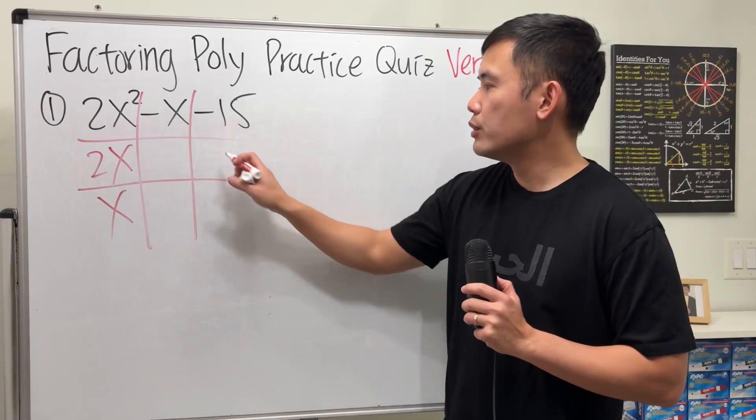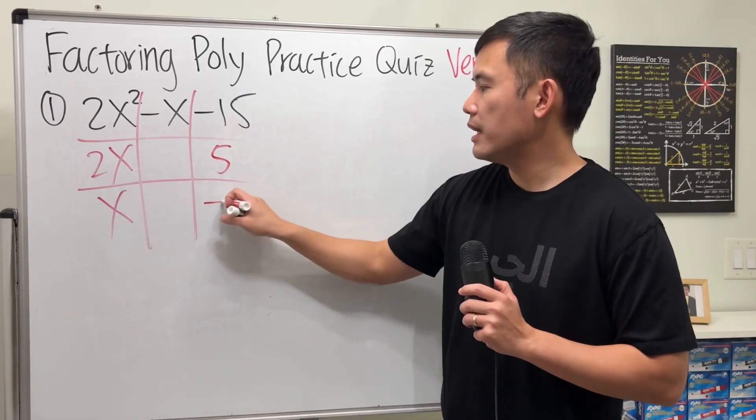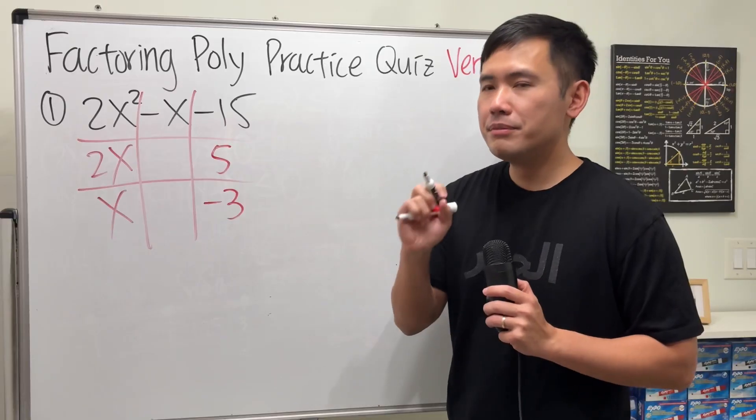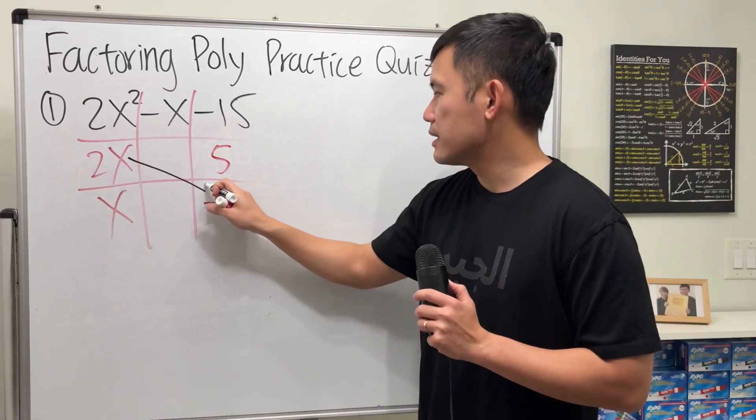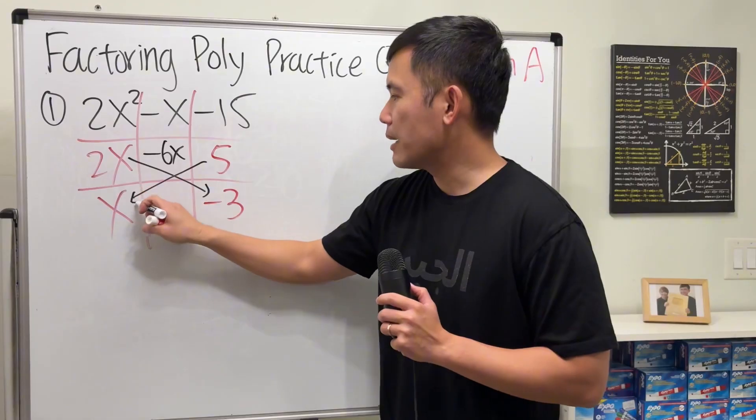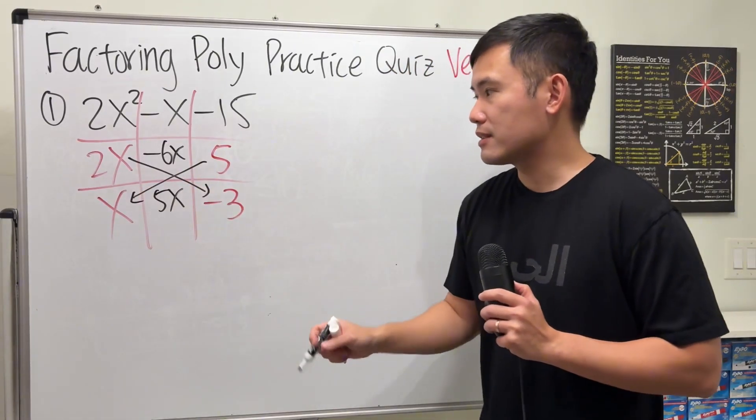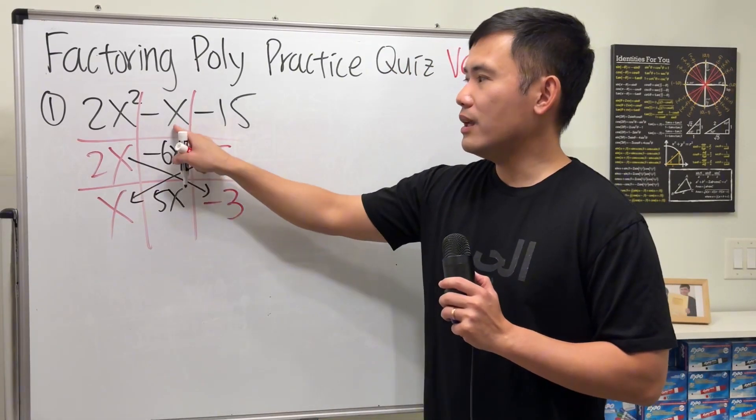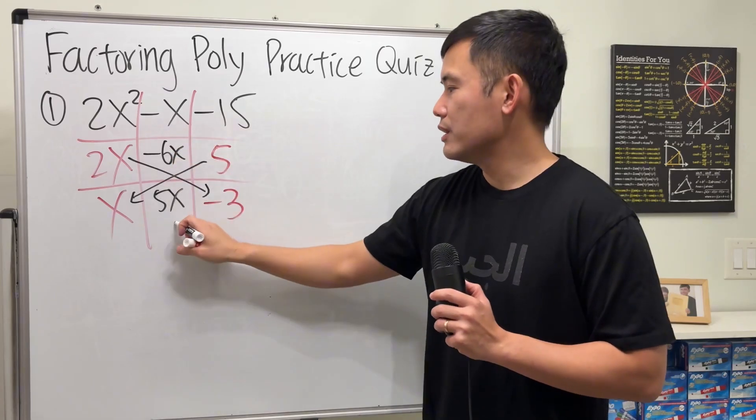We are going to put positive 5 here and negative 3 here. Because 2x times negative 3 gives us negative 6x, 5 times x gives us 5x. Together, we do end up with negative x, so it checks.